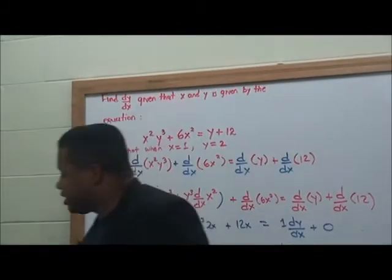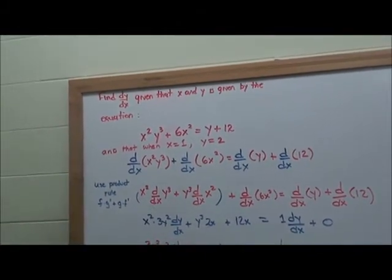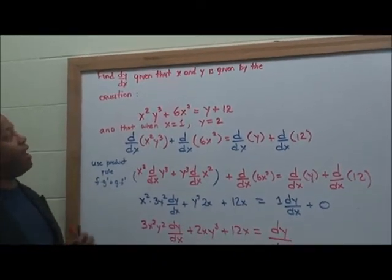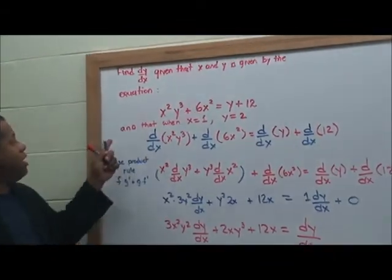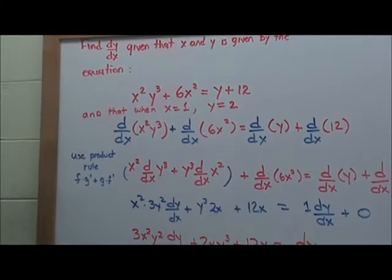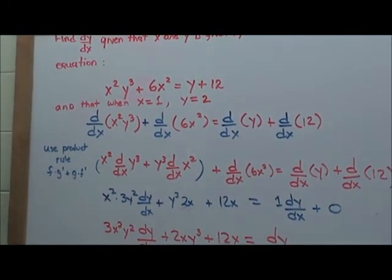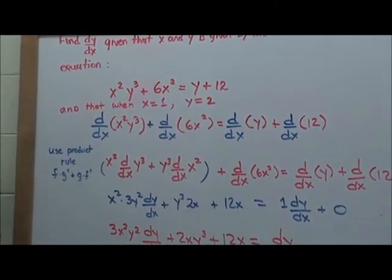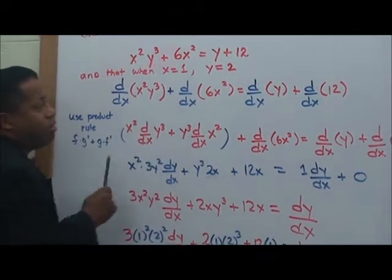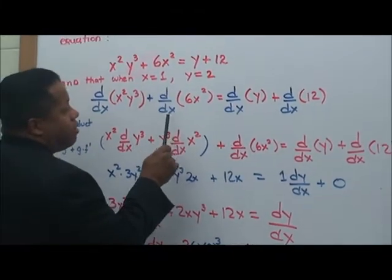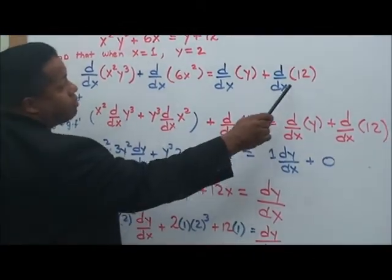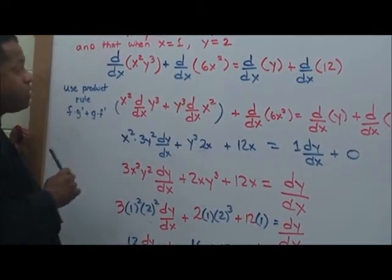Let's do another one. We have another problem here. Find dy over dx given that x and y satisfy the equation here, and that x is equal to 1 and y is equal to 2. Basically, we still have to solve by using implicit differentiation. We want to take the derivative of x squared times y cubed plus the derivative of 6x squared, equal to the derivative of y plus the derivative with respect to x of 12.